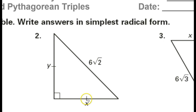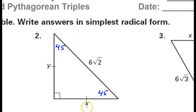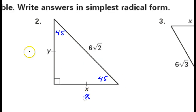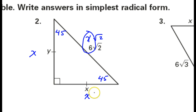Looking at this next one — see how these sides are marked the same? That tells me that this is a 45-45-90 triangle. The pattern is leg, leg, leg radical 2. So it's like this is x, this is x, and this is x radical 2. That means x must be 6 because it's in front of the radical 2, so this must be 6.